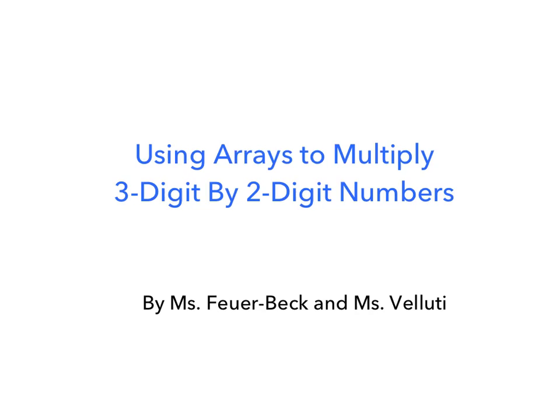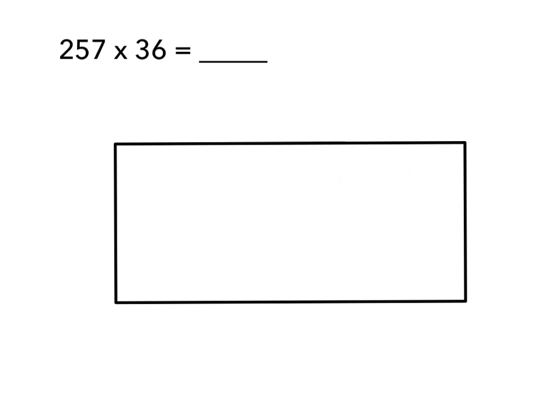Welcome to Math Movies with Ms. Feuerbeck and Ms. Voluti. Today we will be using arrays to multiply 3-digit by 2-digit numbers. The equation above is 257 times 36 equals blank, and we need to figure out how to solve this using arrays.